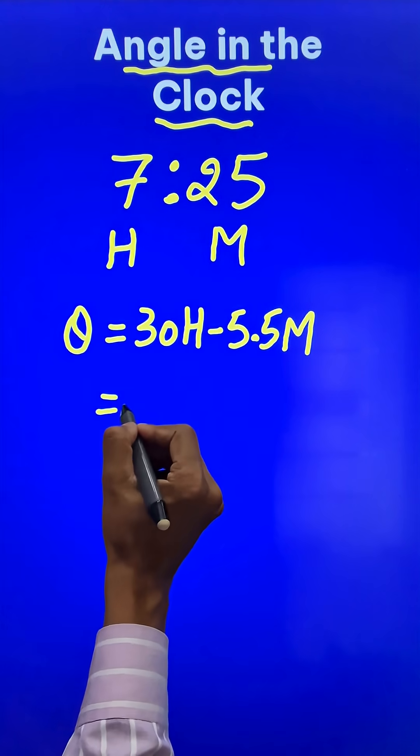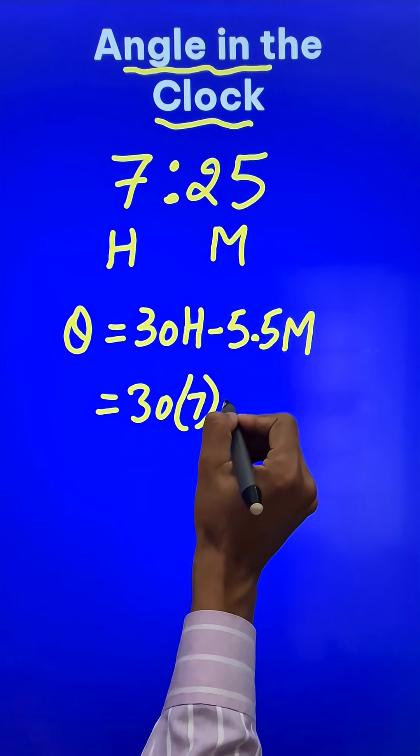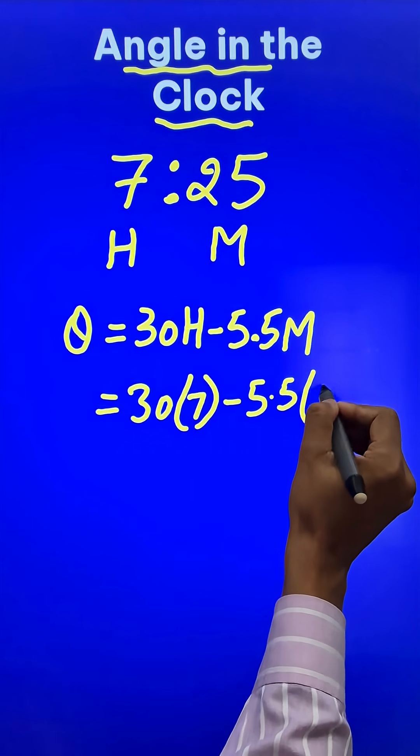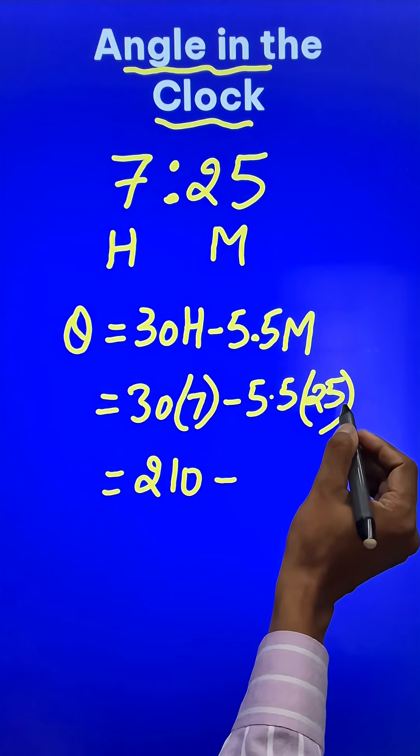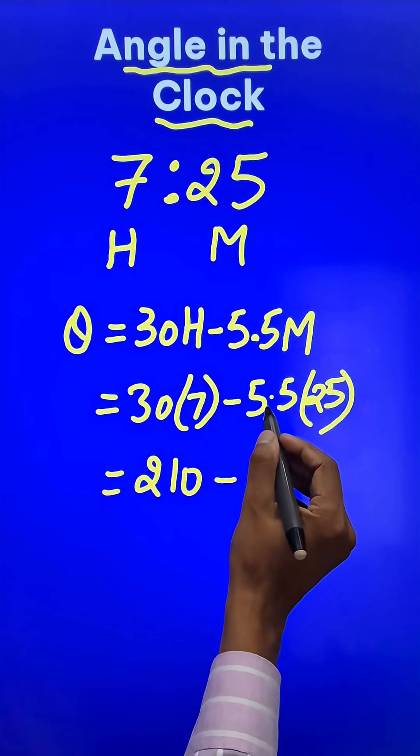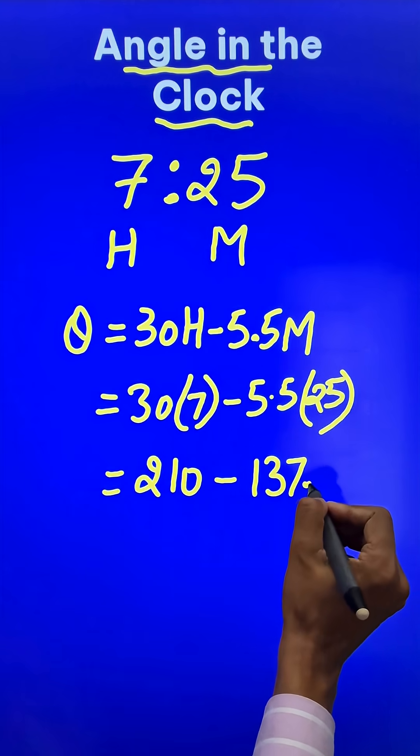Now you can just put the values here: 30 times the hours, which is 7, and 5.5 times the minutes, which is 25. This gives us 210, and 25 times 5.5 gives us 137.5.